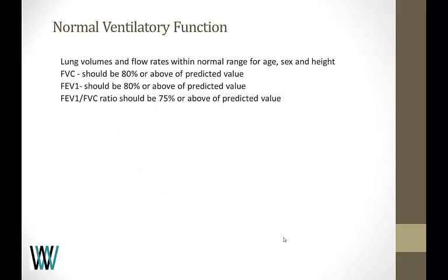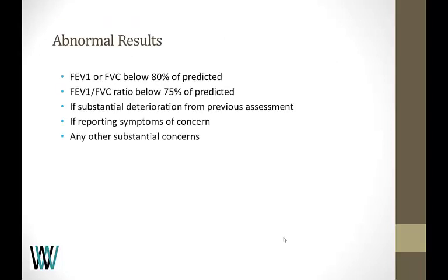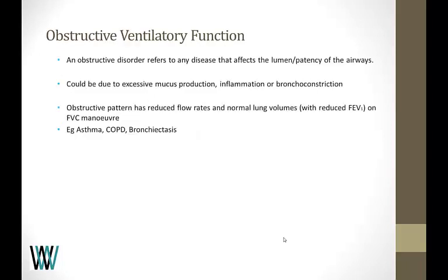Normal ventilatory function is usually set by each individual company, but generally it's looking at about 80 percent of normal. Abnormal results are also set by individual companies and substances. There are generally three results that can come out of a spirometry: obstructive ventilatory function — such as asthma, bronchiectasis, or chronic obstructive pulmonary disease; restrictive ventilatory function; or a combination of both.